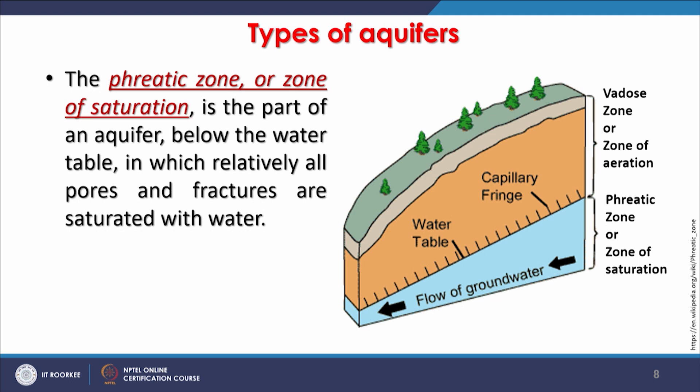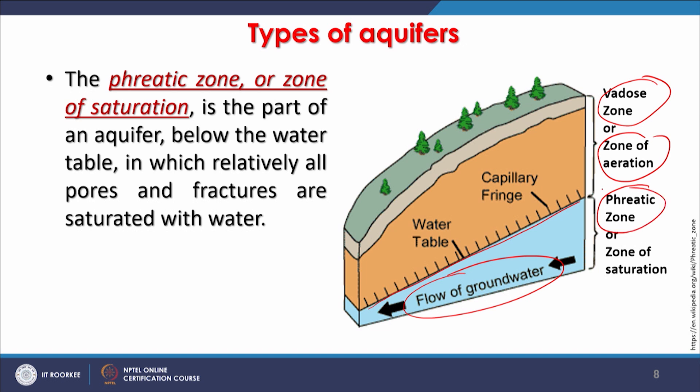If there is a sloping or locally inclined water table surface, groundwater flow will take place. If the layering system is completely horizontal, water will not flow unless you start withdrawing it — then water in the subsurface within the aquifer will start flowing toward the well because a drawdown is created. We will have a discussion on drawdown a little later. This part is called the vadose zone or zone of aeration, and the part saturated with water is called the phreatic zone or zone of saturation — that is your aquifer.